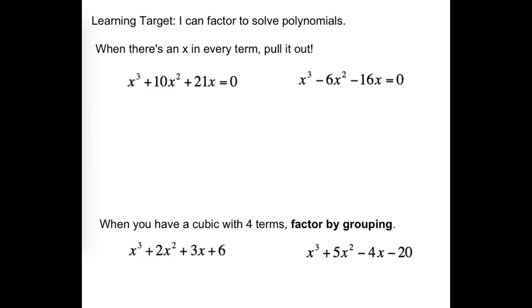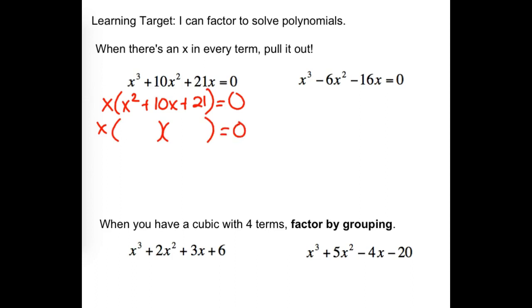Our next topic: we can use the factoring technique to help us solve. First thing to look for is, do you have one side equal to 0? Next thing: can we factor the other side? Do we have any GCF we could pull out? We have an x in this one. If we factor an x out, we have x(x² + 10x + 21). Can we now factor that quadratic trinomial piece? So what are my solutions? x could be negative 7, x could be negative 3, and from the front x it could be 0. We get three solutions.